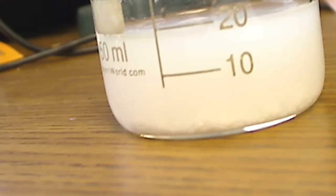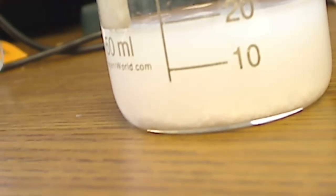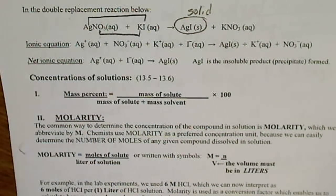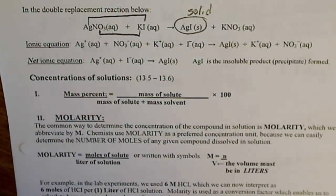This reaction, we called it a double replacement reaction, but it's referred to as a precipitation reaction, and a precipitate is simply a solid that forms after we've mixed two soluble ionic compounds together.